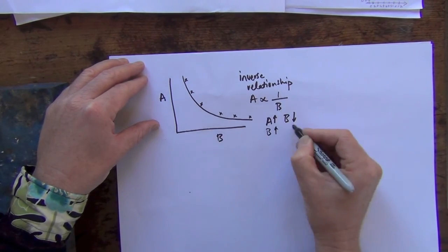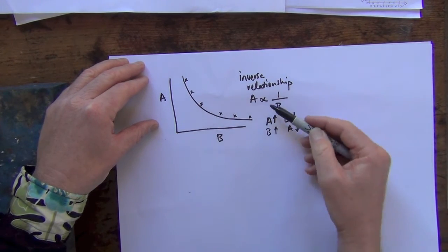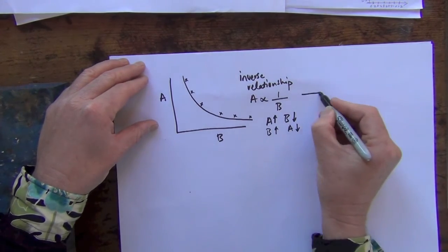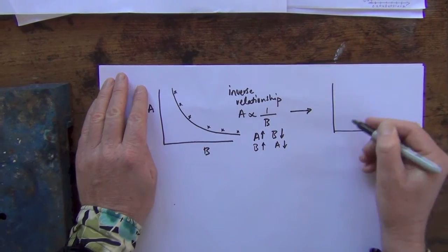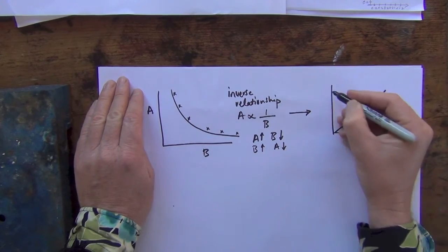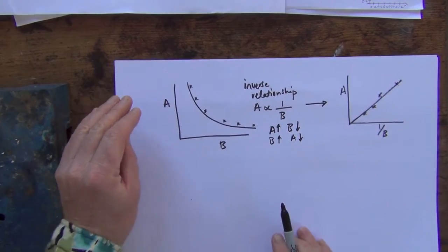So they're basically inversely proportional to one another, and if I was to transform that graph and confirm that relationship, I would put A versus 1 over B.